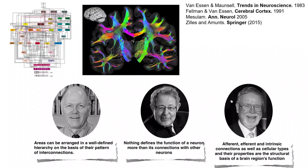This is how to study connections and why they are so important. David Van Essen in 1983 said that areas can be arranged in a well-defined hierarchy on the basis of the pattern of interconnections — meaning connections drive the organization of the brain. Marcel Mesulam said that nothing defines the function of a neuron more than its connections. Essentially, the way you are connected is going to define what you're going to do.